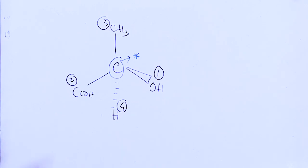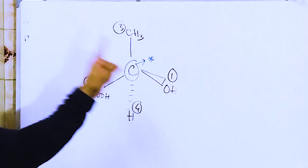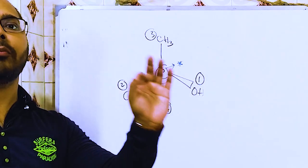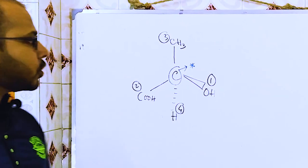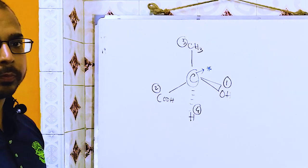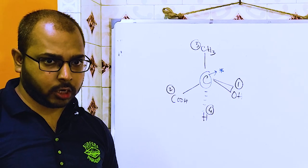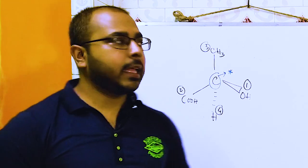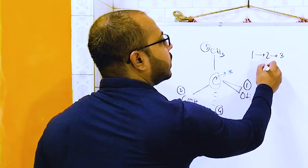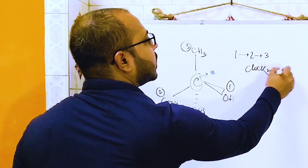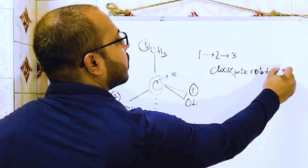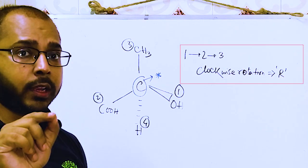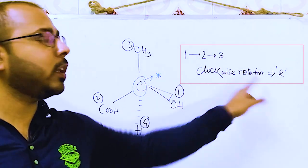So with four different groups assigned priorities 1 through 4, note this rule: if the 4th priority group is below the plane, then rotating from 1 to 2 to 3 in a clockwise direction will be symbolized as R. If the 4th priority group is below the plane and rotation from 1 to 2 to 3 is anti-clockwise, it will be named S.